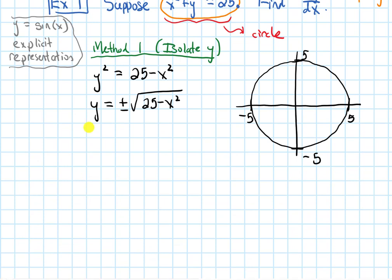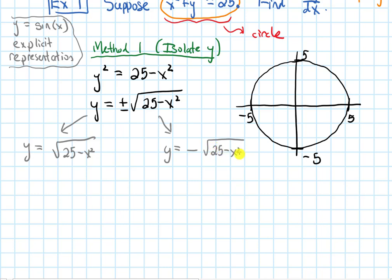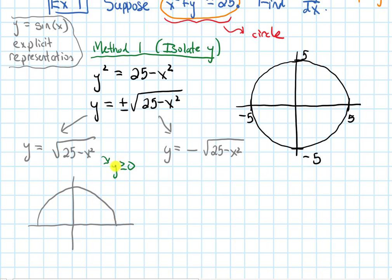That gives me two possibilities: either y is the positive square root of 25 minus x squared, or y is the negative square root of 25 minus x squared. If y is the positive square root, the output can't be negative, because the square root of a number can't be negative. So my y value is going to be greater than or equal to 0 — that's just the top half of the circle.